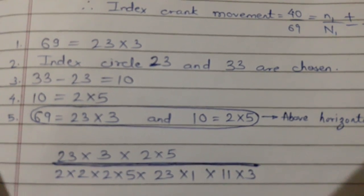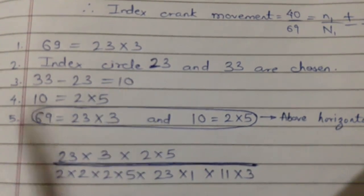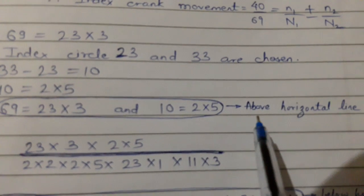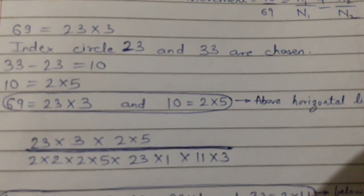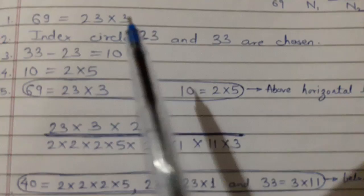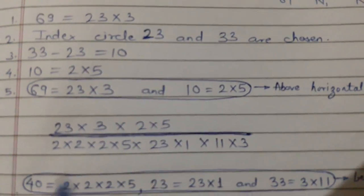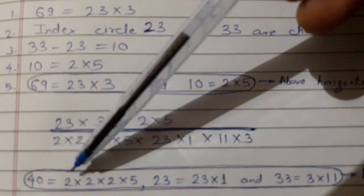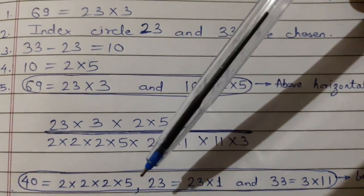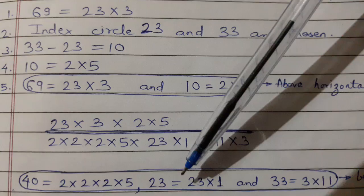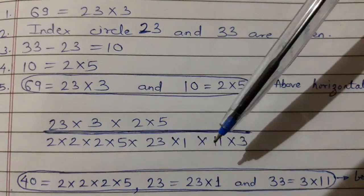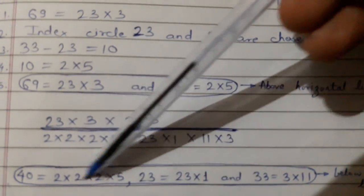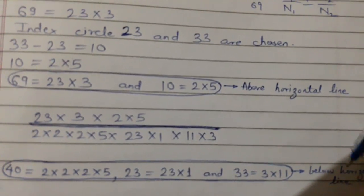Now what you have to do, the division which you have factored and the difference where you have factored, this you have to put above horizontal line. And what you have to do, this 40 you have to factorize. If you see, 40 can be factorized as 2 into 2 into 2 into 5, and 23 can be factorized as 23 into 1, and this 33 can be factorized as 3 into 11.